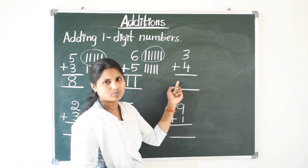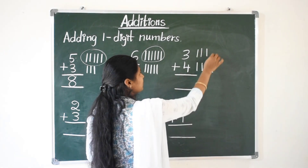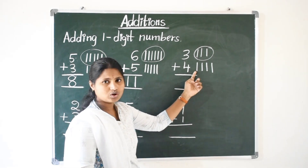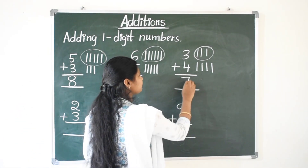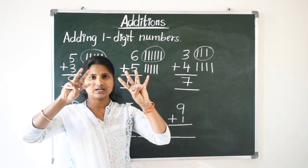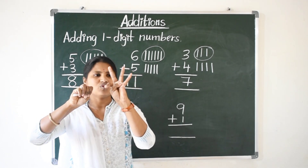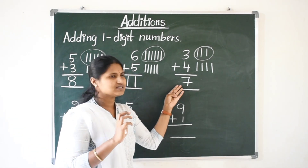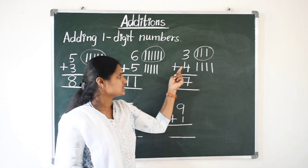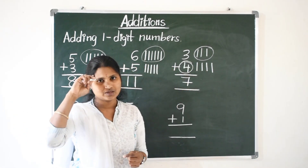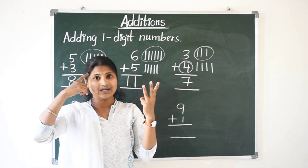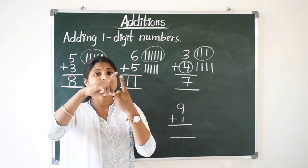Next, three plus four. Here three means three lines, four means four lines. Three after four, five, six, seven. Three plus four is seven. Or else open your three fingers and in this hand four fingers: one, two, three, four, five, six, seven. Total we have seven. Or else keep the big number in mind. Here what is the big number? Four. So keep four in mind, and open three fingers. Four after: five, six, seven.